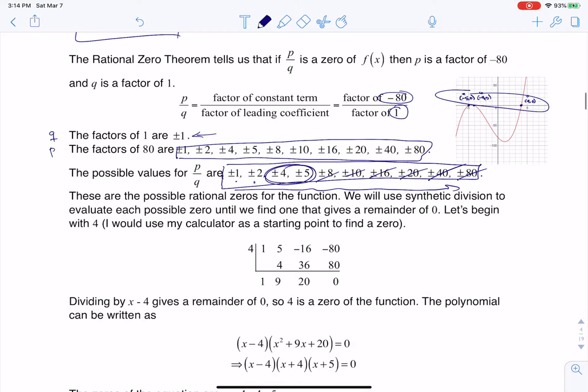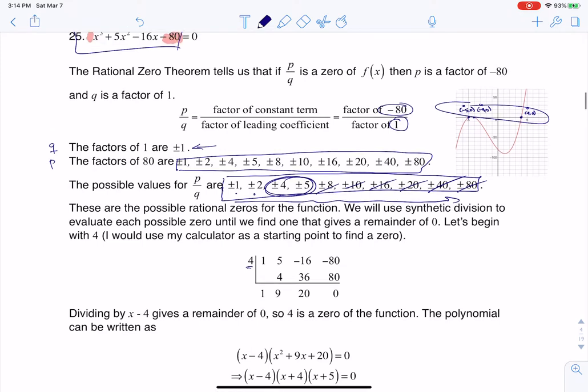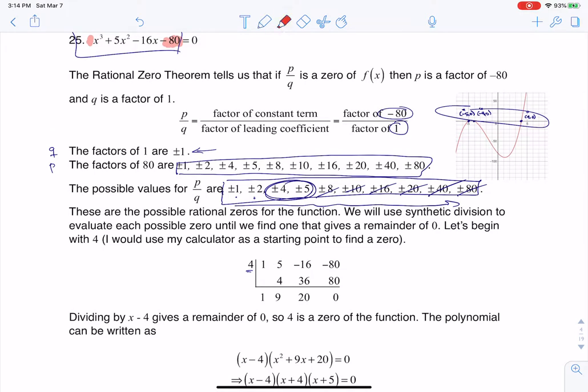So I plugged 4 in for synthetic division, and you can see my coefficients: 1, 5, -16, and -80. When I run through synthetic division, sure enough, I do get my 0.